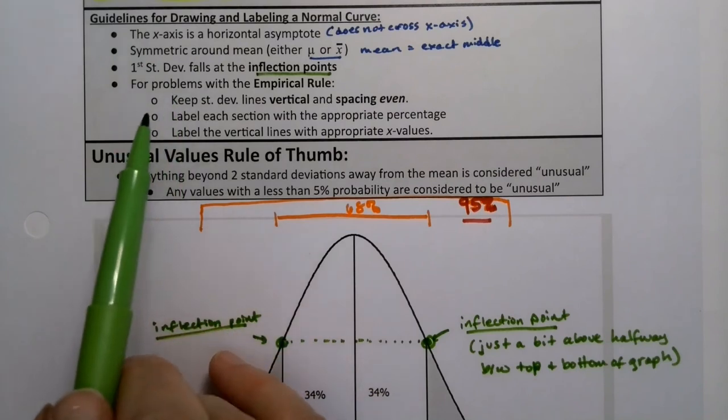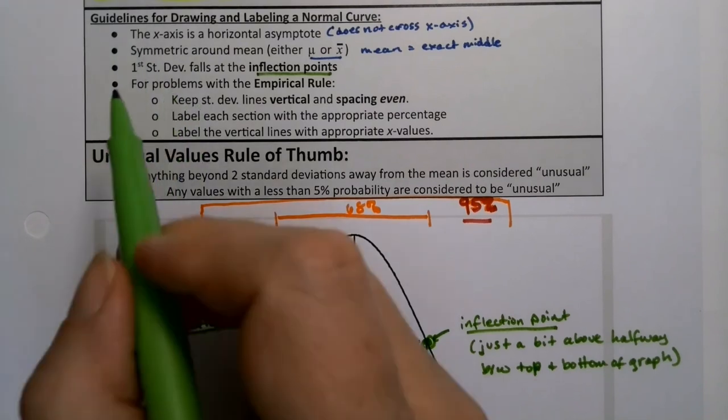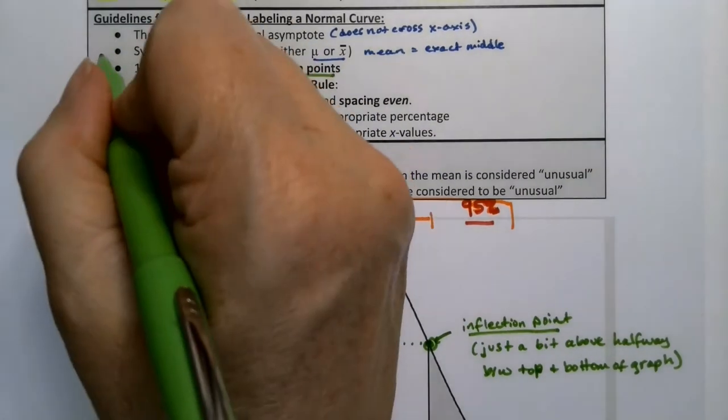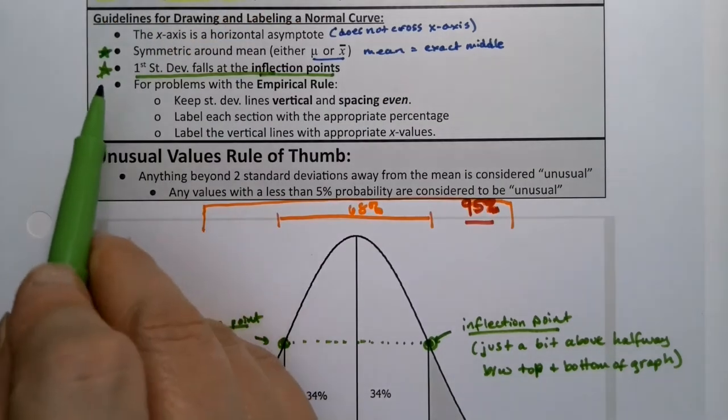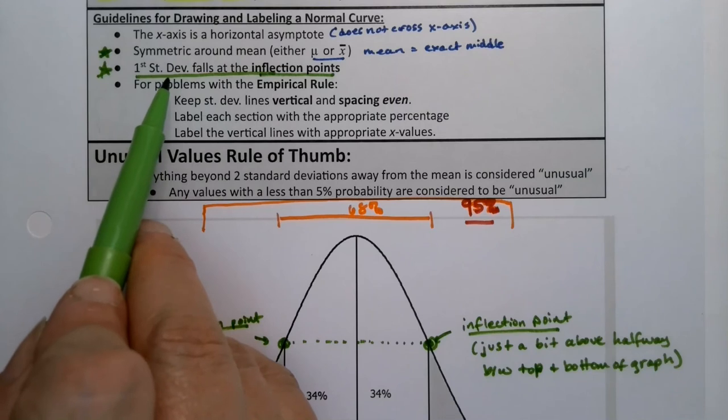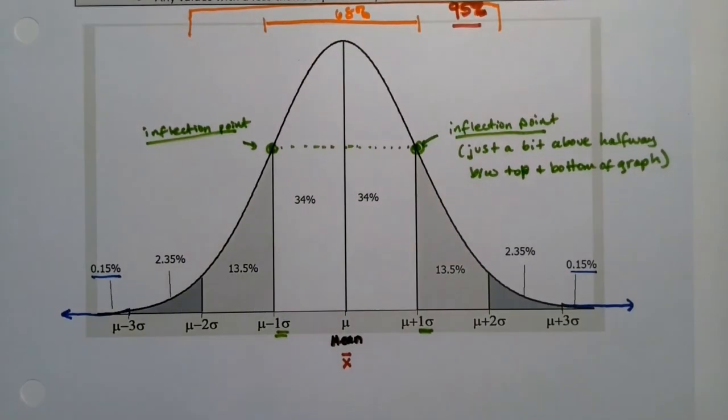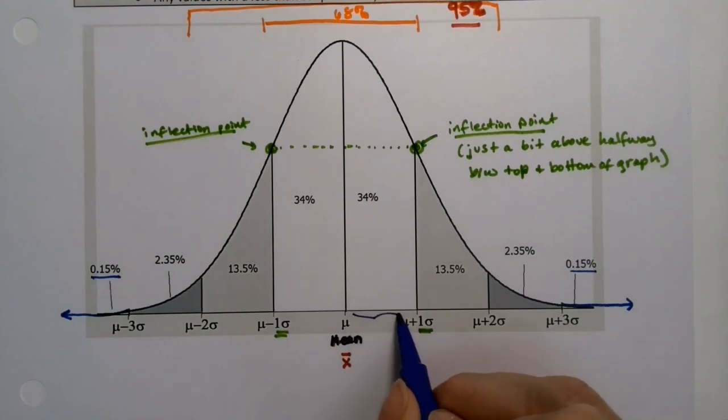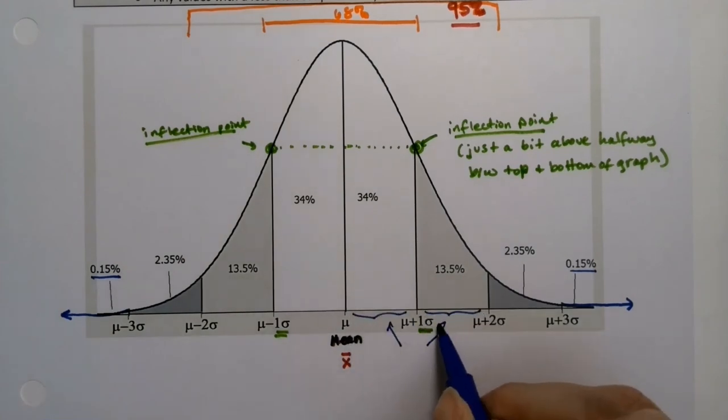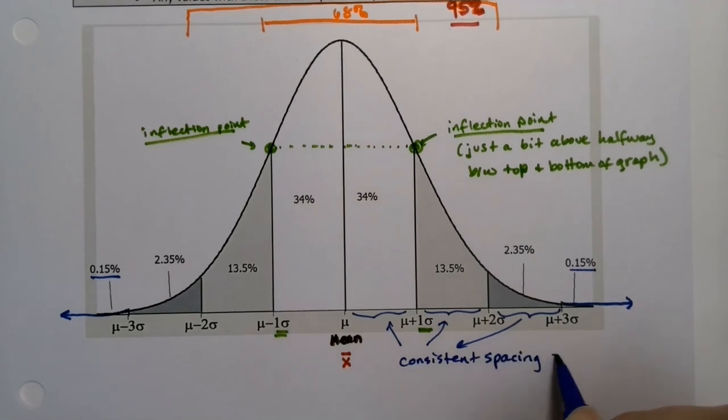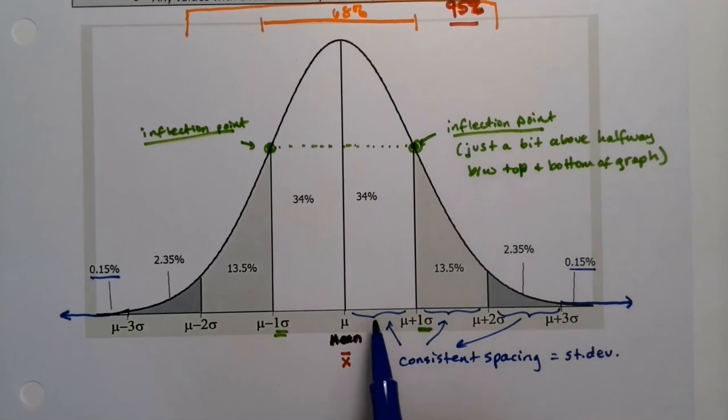Some other rules for when you're dealing with the empirical rule. The inflection point will actually be a very important deal, that's going to come back in chapter seven for sure. And symmetric about the mean also, but that's less of a big deal because you just put the mean in the middle. The inflection point is a little hard because you have to kind of visualize where it lands. Now you have to keep all the spacing vertical even and consistent. So you'll notice this distance and this distance have to stay the same as this distance right here. It has to have consistent spacing. And each of those spaces is equal to the standard deviation.